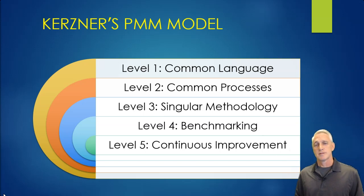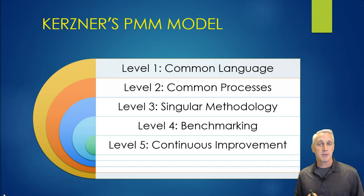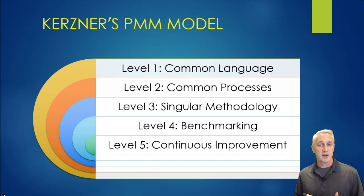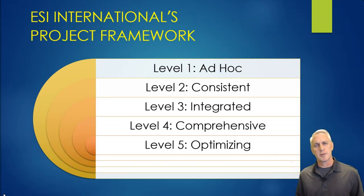Kerzner's model is a little different. Level one is a common language being adopted. Level two is common processes adopted. Level three is a singular methodology. Then level four is benchmarking, and level five is continuous improvement. That one seems to flow a little bit better.